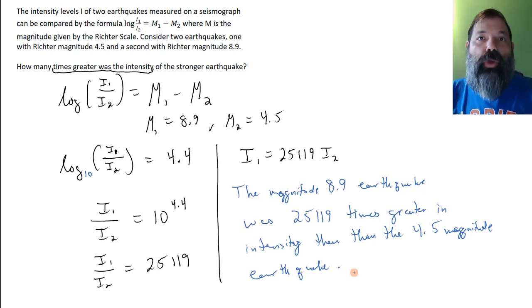All right, so here we had 10 to the 4.4 power, that's 25,000 roughly. So if we move on a log scale by 4.4 units, that's 25,000 units on a traditional scale. Thank you.